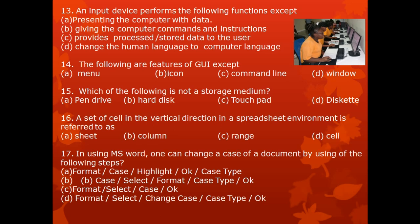Question 15. Which of the following is not a storage medium? A. Pen drive, B. Hard disk, C. Touchpad, D. Diskettes. Question 16. A sort of cells in the vertical direction in a spreadsheet environment is referred to as: A. sheets, B. column, C. range, D. cell.